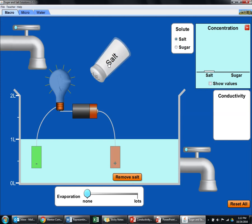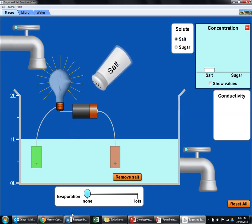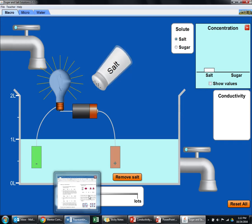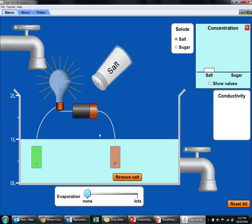Now, another property is that if I add more salt, you can see that the light bulb is getting brighter. So how well the electrical current is getting transferred must depend on how many ions are in the water.